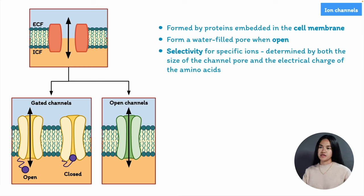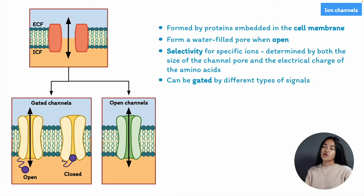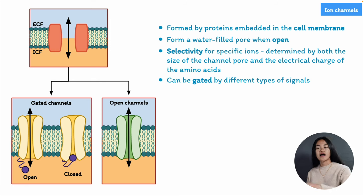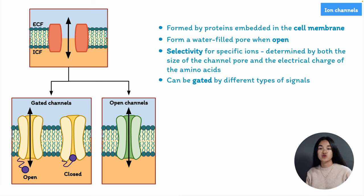Ion channels can exist in different states — they can either be in an open or closed state. These channels are regulated to make sure that they are open or closed in response to different types of physiological signals, because cells such as neurons and muscle cells rely on ion channels to create the appropriate signals that allow those cell types to do their job effectively.